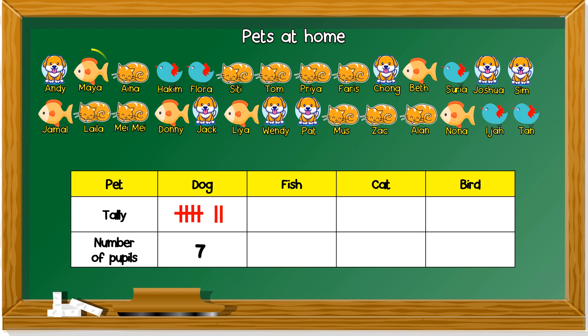Look at fish. One, two, three, four, five. Remember, five stroke. Six. So, six pupils has fish.